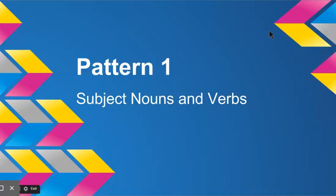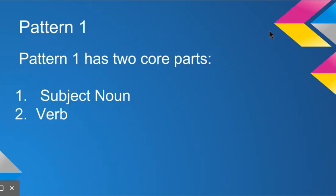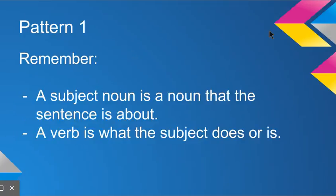Okay, today boys and girls we're going to look at Pattern 1. That pattern has subject nouns and verbs. Pattern 1 has two core parts, just like I just said: subject noun and a verb. Remember, a subject noun is a noun that a sentence is about. A verb is what the subject does or is.